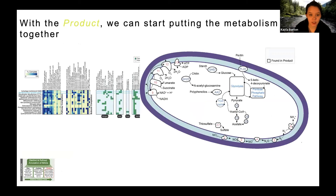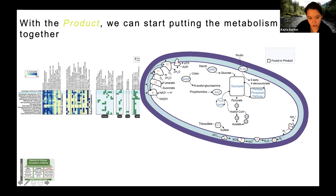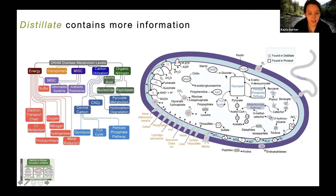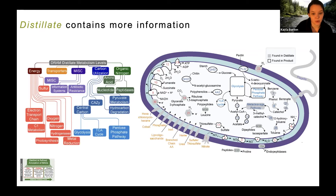With the product, we can already start building genome cartoons. For the Dichloromonas genome cartoon, the product lets us add the electron transport chain, external electron acceptors, CAZymes like polyphenolics, and glycolysis and other carbon utilization pathways. But the distillate is one level up and provides a higher-level view of other metabolisms — not just how they're making a living, but things like transporters and flagella.